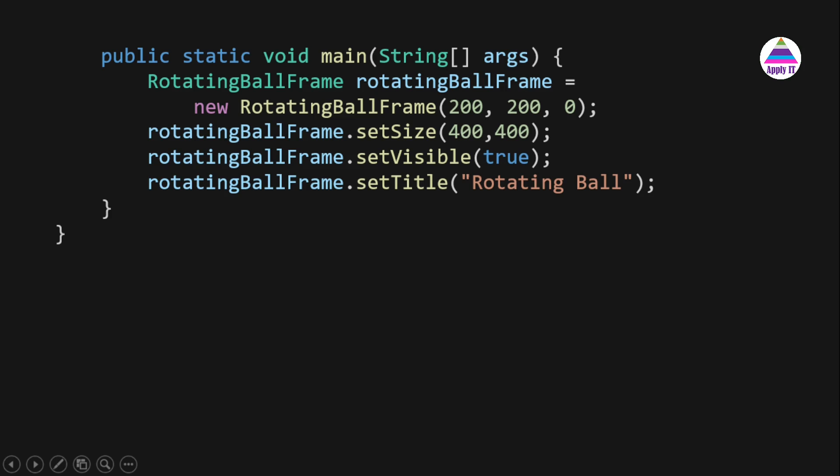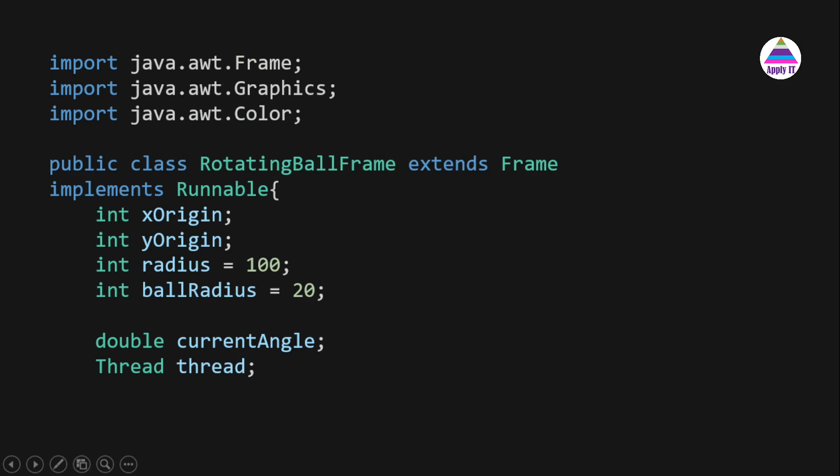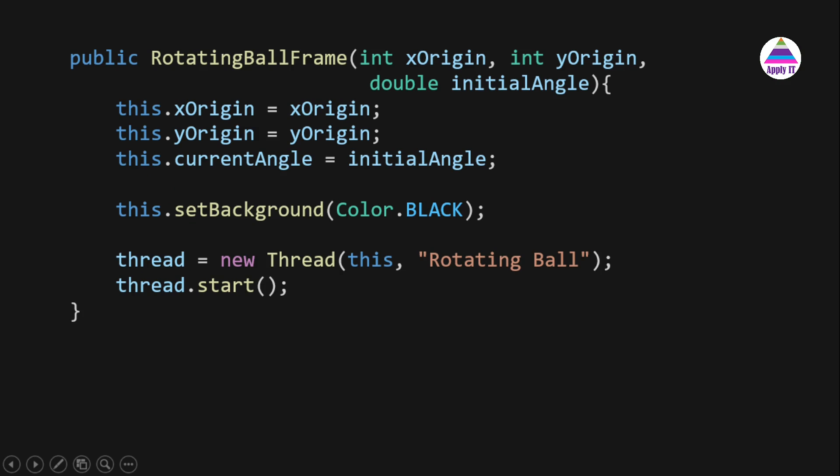In the constructor, we assign xOrigin and yOrigin to the data members, set currentAngle to the initial angle passed in, and set the background color to black. We then create a Thread by passing 'this' — the implementation of the Runnable interface — along with a thread name. We call thread.start(), which will invoke the run method where our animation logic is written.